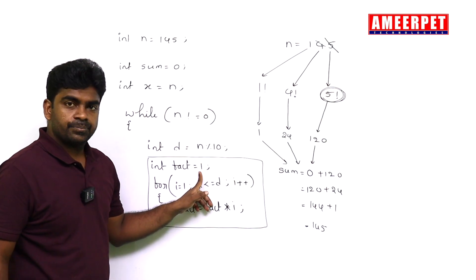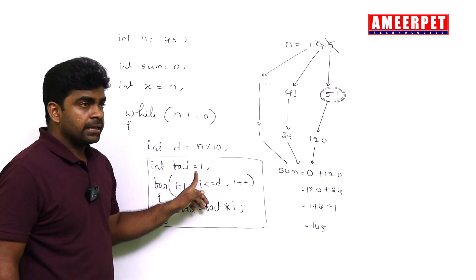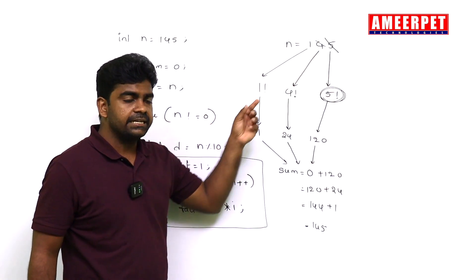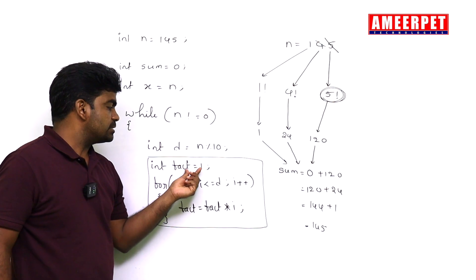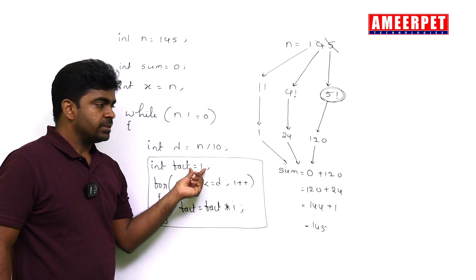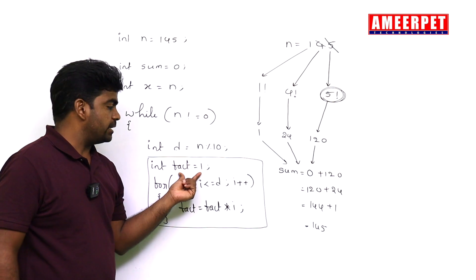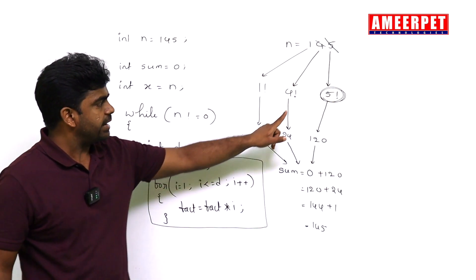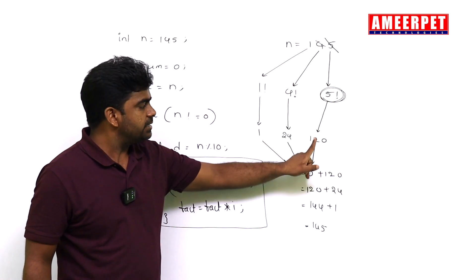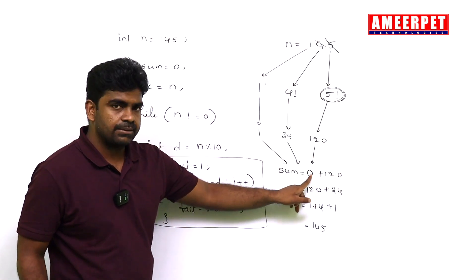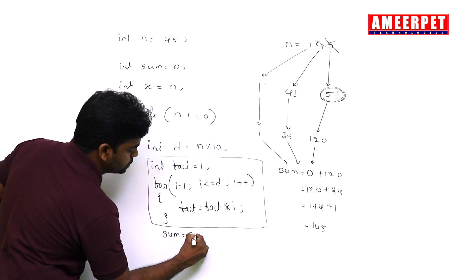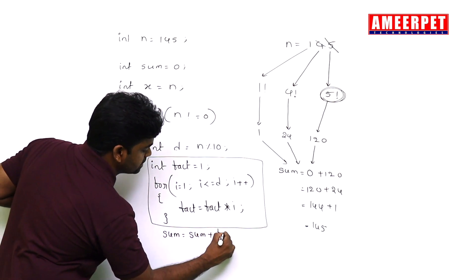If you initialize outside, while finding the first digit factorial, it only starts with one. If you write here, every time you are finding the factorial for each digit, the fact value starts with one. Once you find the factorial, add that factorial value to the sum. Simple: outside, sum equals to sum plus fact.